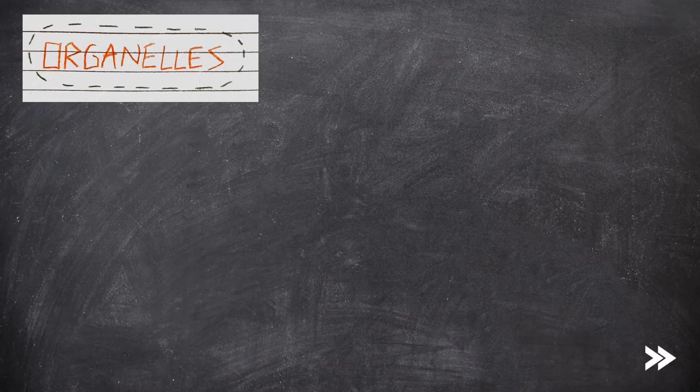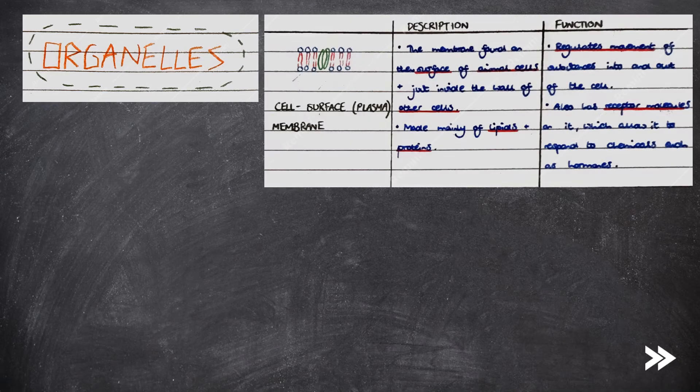Starting with the cell surface membrane, which is the membrane found at the surface of animal cells and just inside the wall of other cells. It is made mainly of lipids and proteins, and also carbohydrates attached to either the lipids or proteins. It regulates the movement of substances into and out of the cell, and also has receptor molecules on it which allow it to respond to chemicals such as hormones.